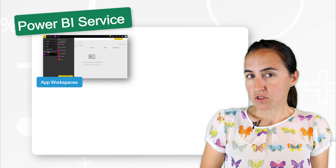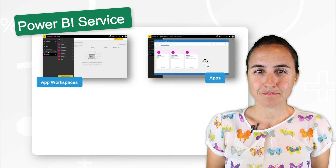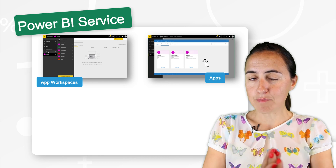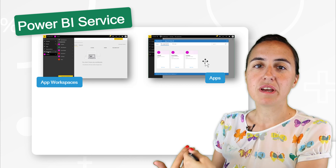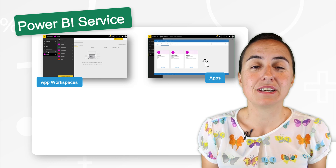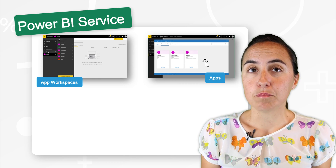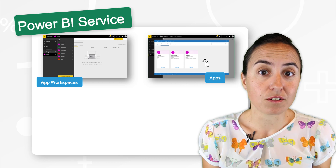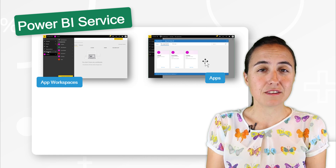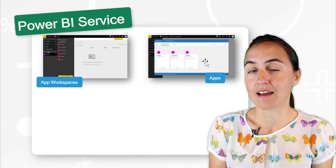There is another way to share reports, and that is to publish them as an app. If you publish a report as an app, the user will be able to consume that report and it is read-only. It is a much easier and cleaner experience for information consumers — people that are only going to view the report and nothing else.